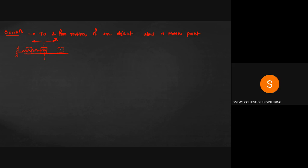This motion of the mass about the mean equilibrium point, which is x equal to zero, is called oscillation. Oscillatory motion is sometimes referred to as harmonic motion.